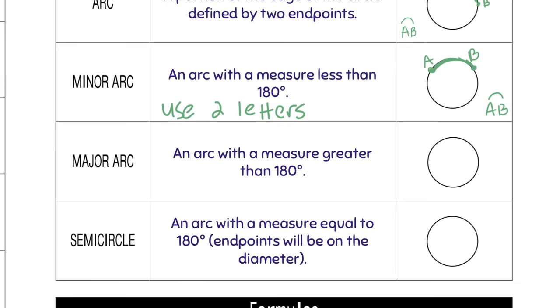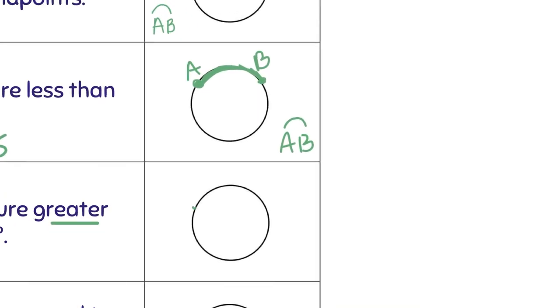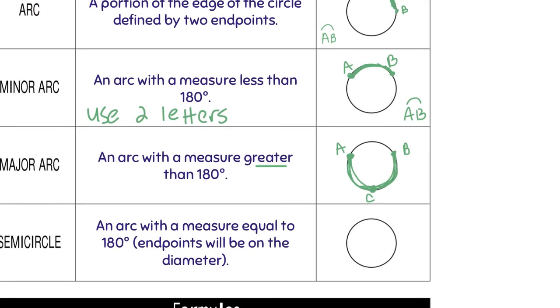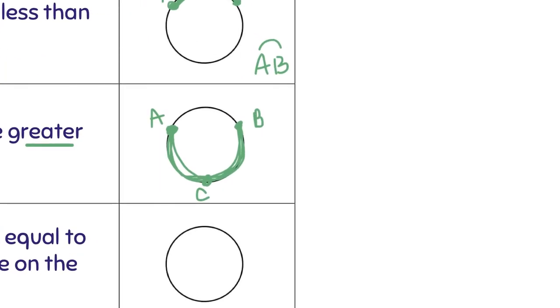Then we have a major arc, which is just the opposite. It's an arc with a measure greater than 180 degrees. So if I already use those same two endpoints, now I want this side that's bigger than half the circle. So I want this half. The thing about major arcs, though, is that you need to use three letters. So this would be arc A, C, B. It lets you know which side of the circle is the side that's colored in.